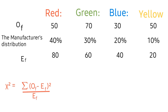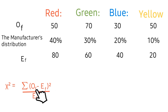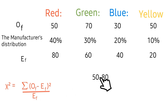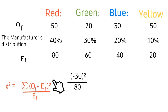Next is to calculate the chi-square test statistic. The formula is: chi-square equals the summation of (observed frequency minus expected frequency), all squared, divided by expected frequency. For red: the observed frequency is 50, the expected frequency is 80, so (50 minus 80) squared divided by 80.